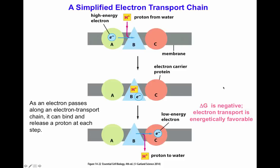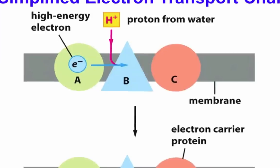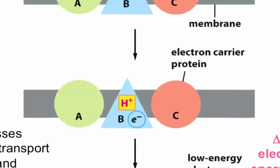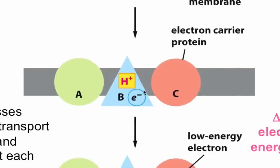Let's take a look at a simplified electron transport chain with three different complexes interacting with one another — molecule A, molecule B, and molecule C. Molecule A has a high energy electron and donates it to complex B. Complex B undergoes that slightly negative charge intermediate and removes a proton from a water molecule. So complex B now holds the electron and that proton.